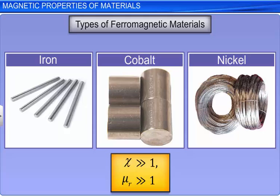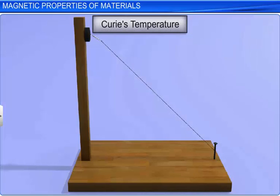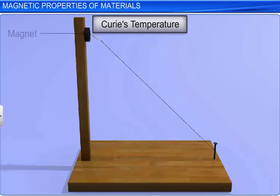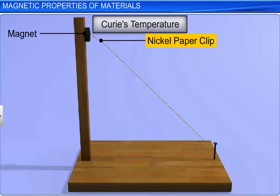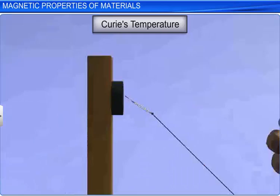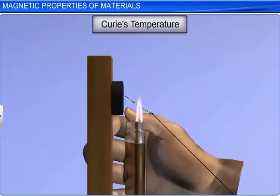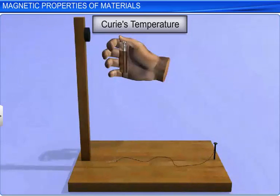Now let us discuss an activity to know the effect of temperature on ferromagnetism. Consider an L-shaped wooden stand and fix a strong magnet on top of it. Consider a ferromagnetic material, say a nickel paper clip tied to a string which is fixed at the base of the wooden stand. Let the paper clip be suspended in air with the help of a magnet. Now heat the clip with a lighter to increase its temperature. At a particular temperature, the paper clip falls down; that is, at that temperature, the clip transforms from being ferromagnetic to paramagnetic.